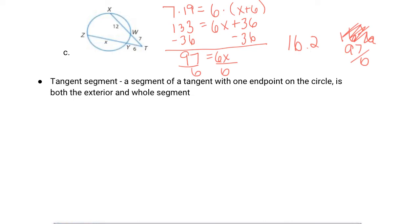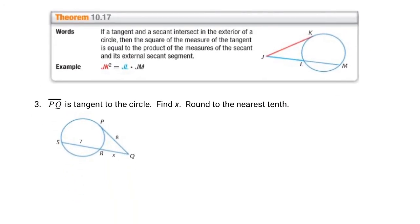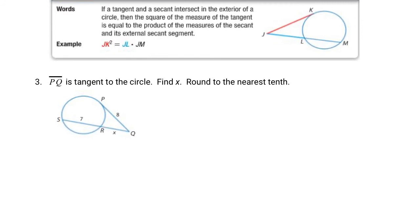Next, we have a tangent segment. A segment of a tangent with one endpoint on the circle is both the exterior and the whole segment. If a tangent and a secant intersect in the exterior of a circle, then the square of the measure of the tangent is equal to the product of the measures of the secant and its external secant segment. That's a whole lot of words. Let's just go ahead and do it and make it happen. I do like this explanation though. JK squared, so that is the tangent, JK, is equal to the external segment times the whole secant. So JL times JM equals JK squared. Let's see what we can do with that knowledge.